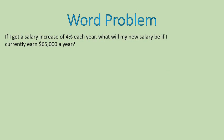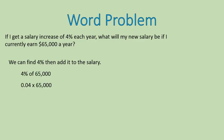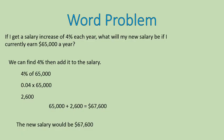Last word problem: If I get a salary increase of 4% each year, what will my new salary be if I currently earn $65,000 a year? I'm looking for my $65,000 salary plus my increase of 4%. We can find 4% then add it to the salary. 4% of $65,000 is calculated by converting the percent into a decimal, 0.04, times $65,000. My increase is $2,600. I add that to $65,000 and get my new salary of $67,600.